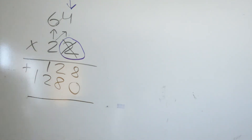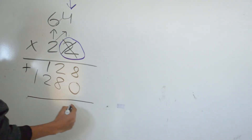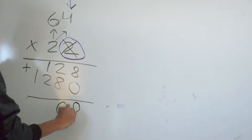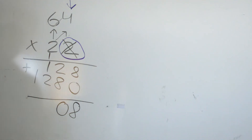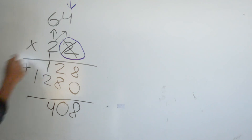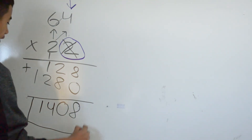Now we add both numbers together. 8 plus 0 is 8. 8 plus 2 is 10. Bring the 1 up. 2 plus 1 plus 1 is 4. And 1 plus nothing is 1. And that's our final answer.